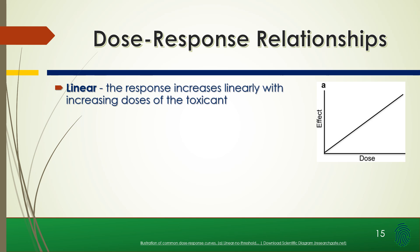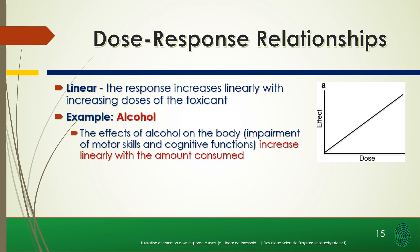Some types of dose-response. We have linear — the response increases linearly as the dose increases. An example of this is alcohol: the effects on the body, including impairment of motor skills and cognitive functions, increase linearly with the amount of alcohol consumed.